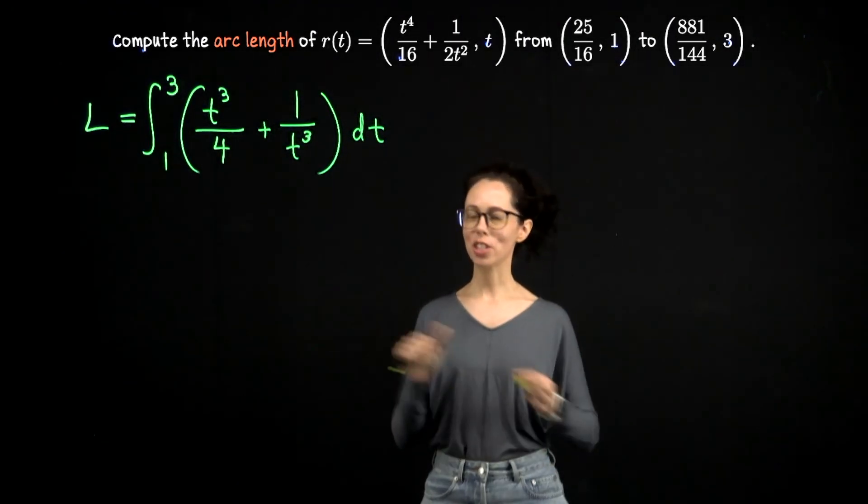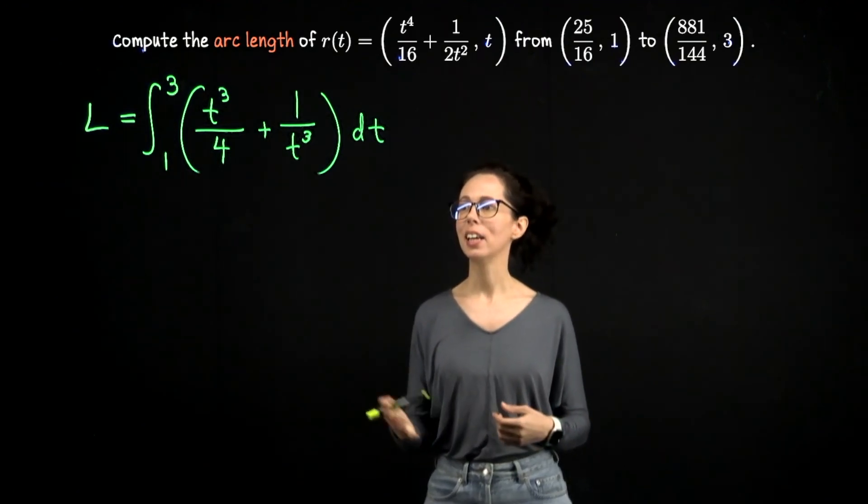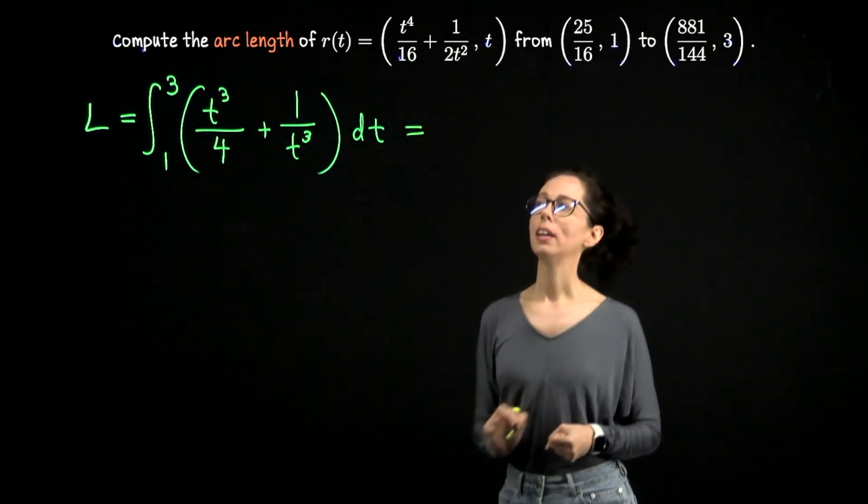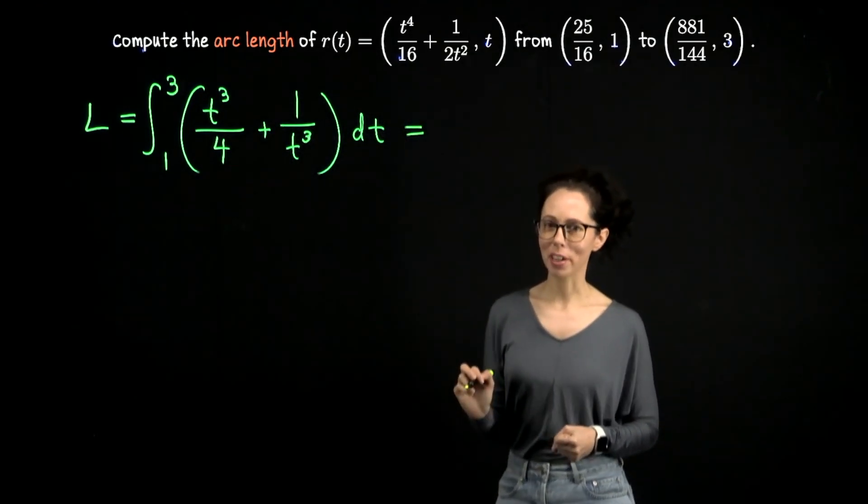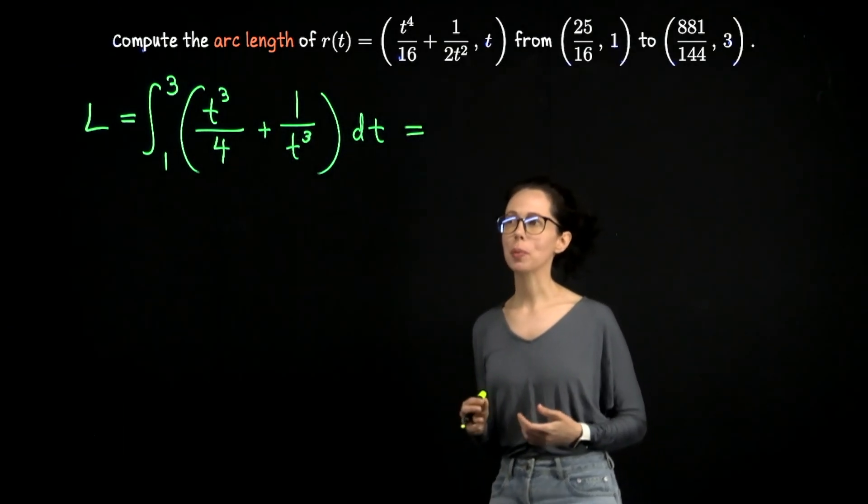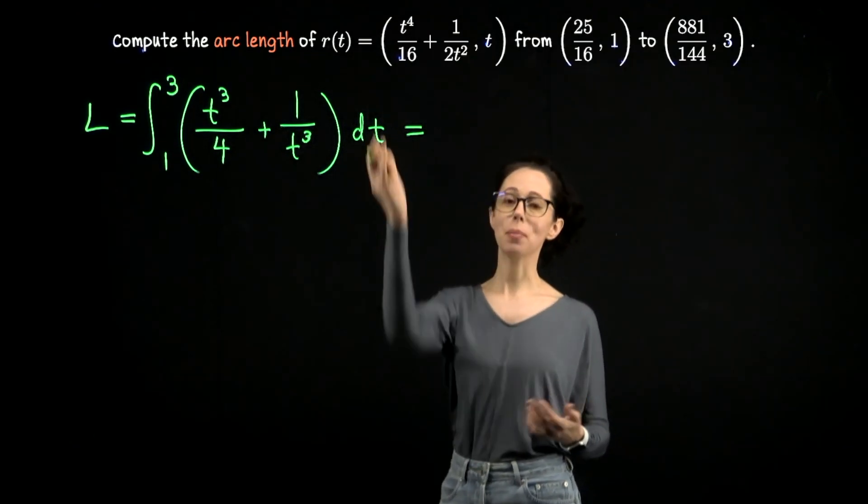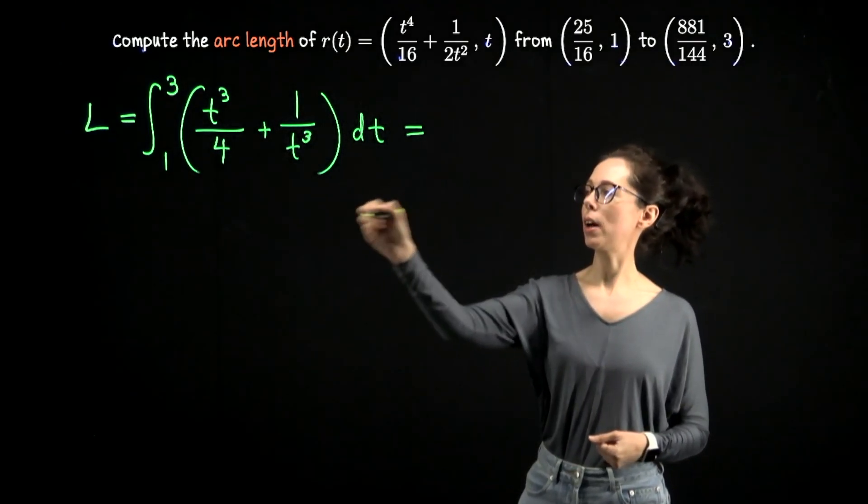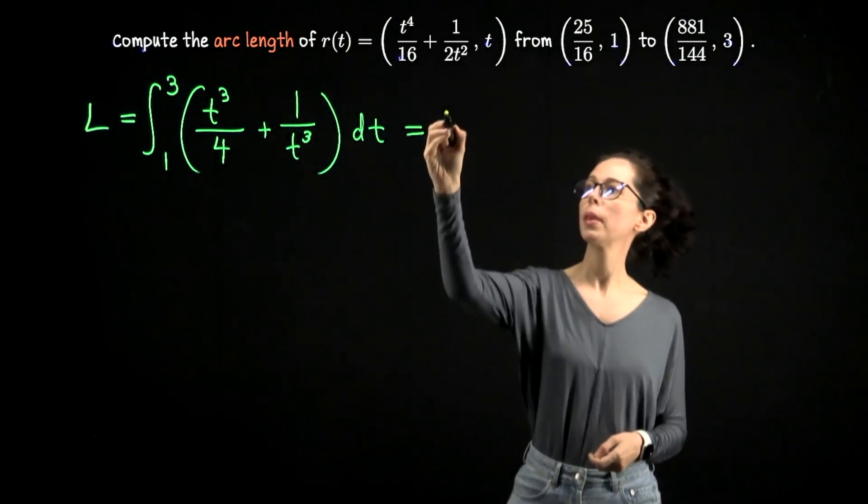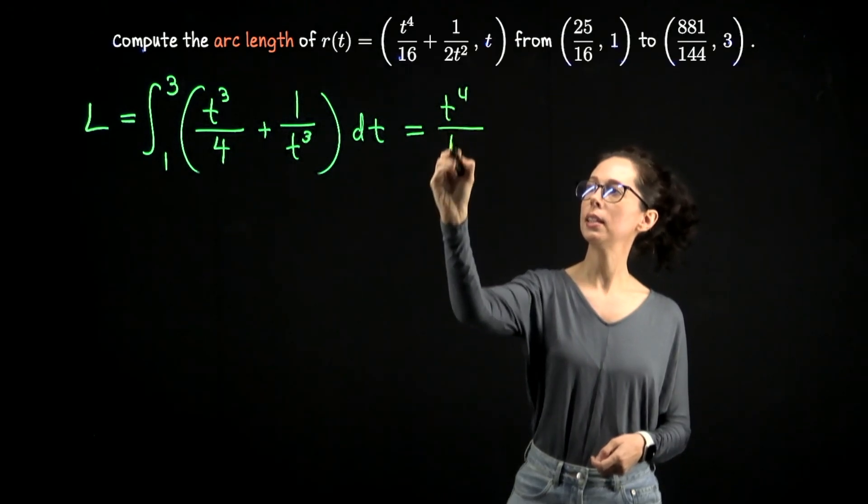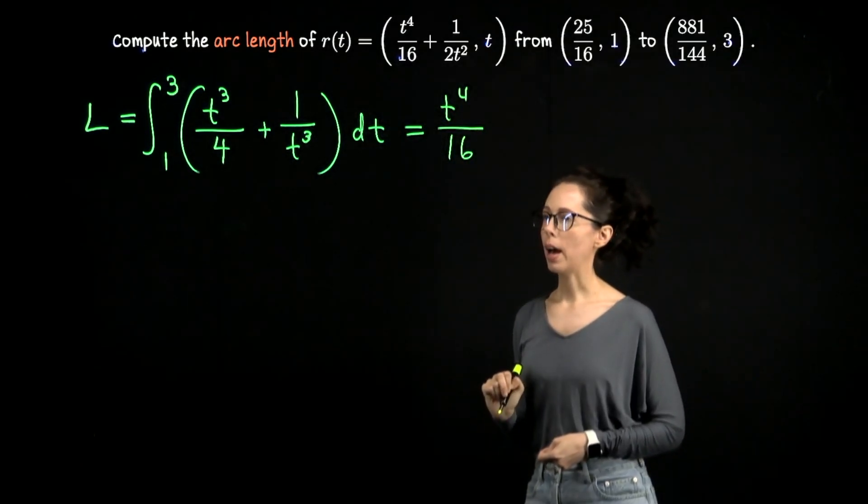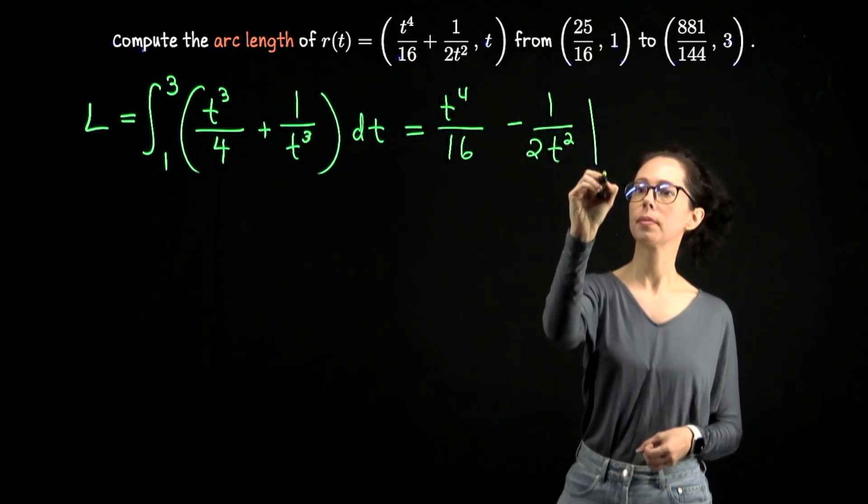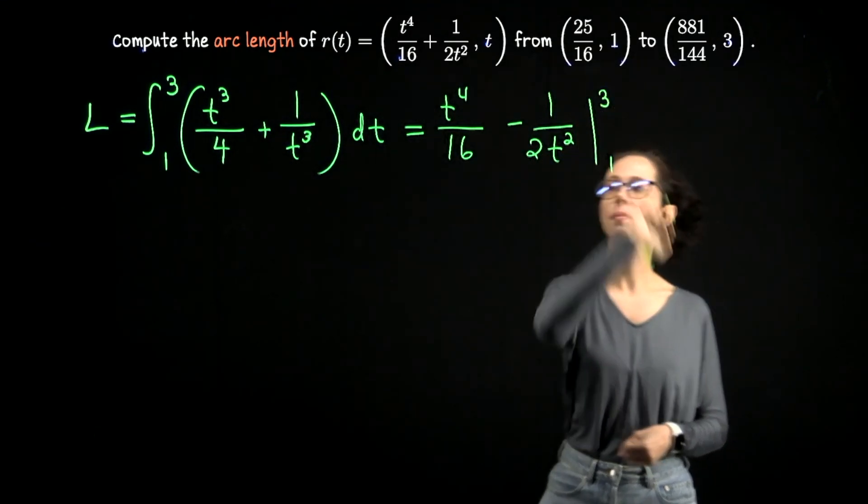All right, let's go ahead and finish this problem. So we want to integrate the expression that we just arrived at from one to three. The integrand is very similar to dy dt if you see that connection, which means that the anti-derivative is going to be very similar to the original expression for y except for the sign change. So we'll have the anti-derivative of t cubed over four is t to the fourth over 16. And then we will have minus one over two t squared like that.